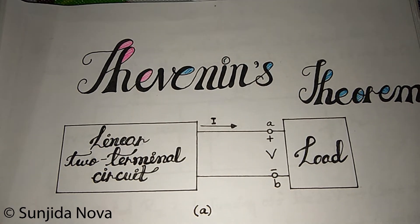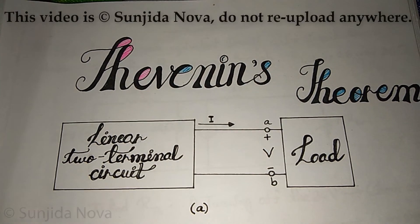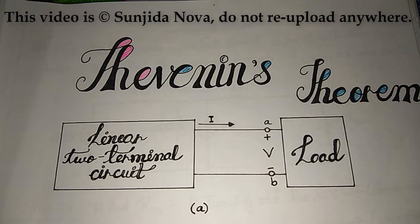We have a circuit diagram of Thevenin's Theorem. The Thevenin's Theorem states that a linear two-terminal circuit can be replaced by an equivalent circuit consisting of a voltage source V-Thevenin in series with a resistor R-Thevenin, where V-Thevenin is the open circuit voltage at the terminals and R-Thevenin is the input or equivalent resistance at the terminals when the independent sources are turned off.